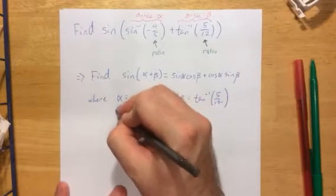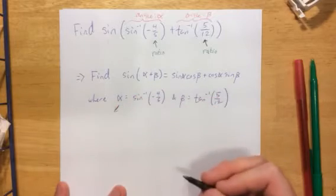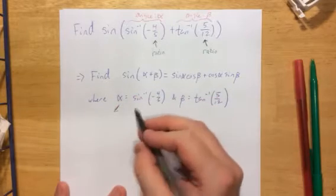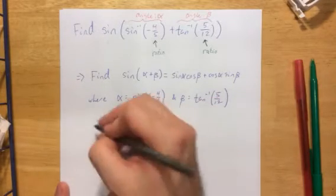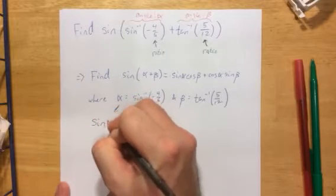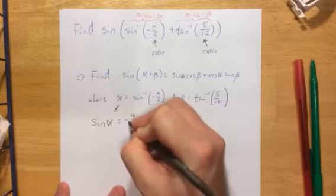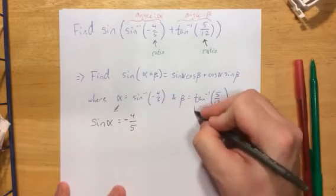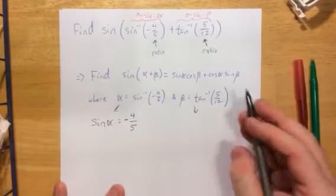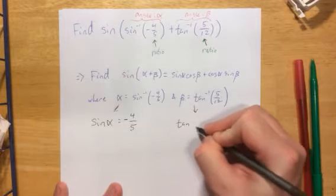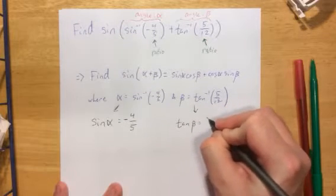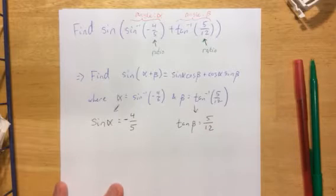So here's what I'm going to do. I'm going to take this expression with alpha, and I'm going to express this in terms of a sine rather than an inverse sine. So this is telling me that the sine of alpha is equal to negative 4 fifths. This guy over here, I'm going to do the same thing, and eventually I'm going to draw a nice little picture. And this is that the tangent of beta is equal to 5 twelfths.